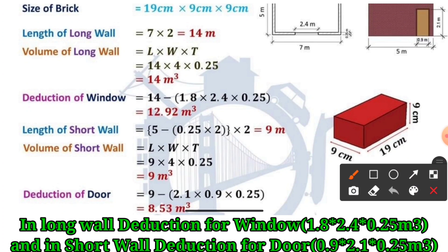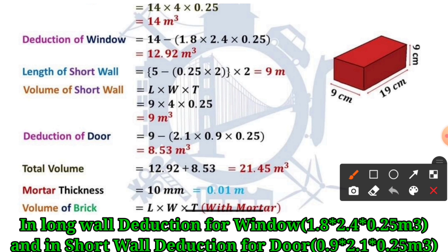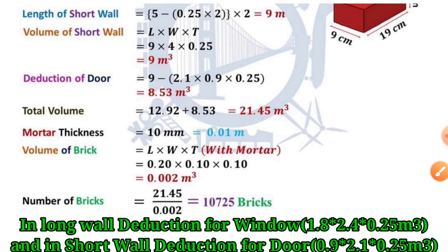For the door deduction: dimension of door is 0.9 × 2.1 meters, multiplied by the brick wall thickness of 0.25 meters. The short wall volume after door deduction equals 9 × 4 × 0.25, minus (2.1 × 0.9 × 0.25), giving 8.53 cubic meters. Combined with the long wall result of 12.92 cubic meters, the total volume of brickwork after deduction of door and window is 21.45 cubic meters.